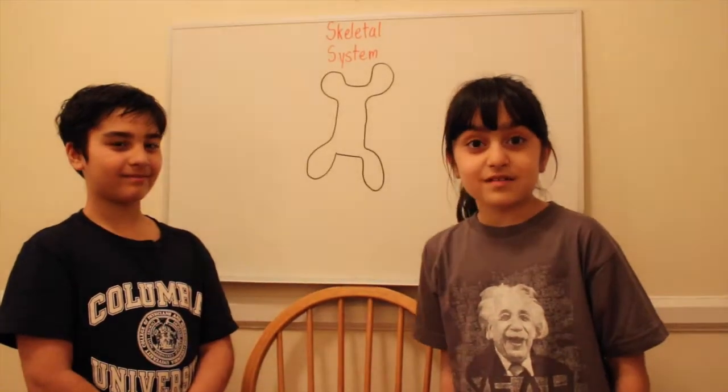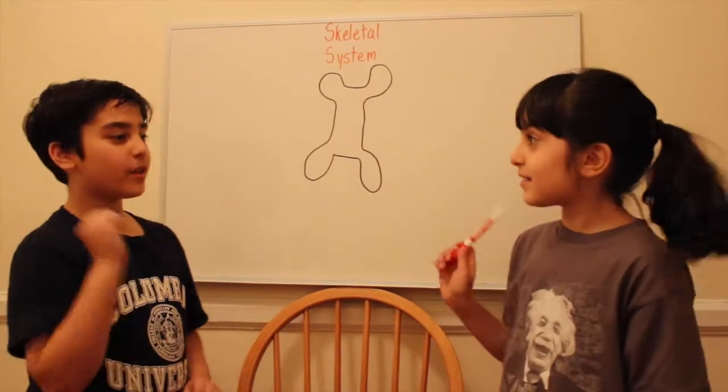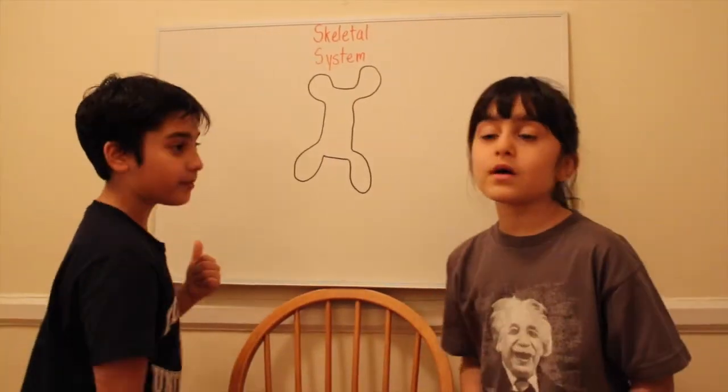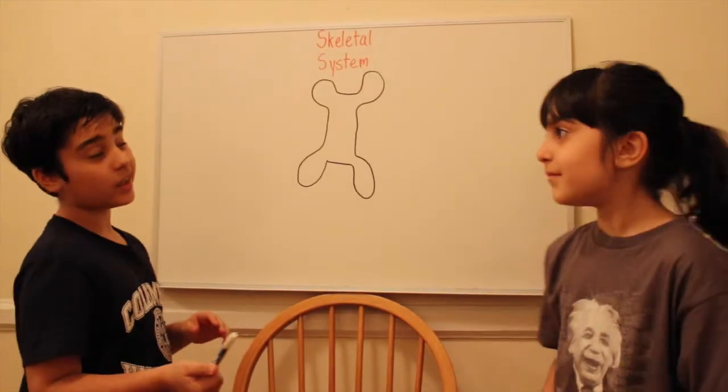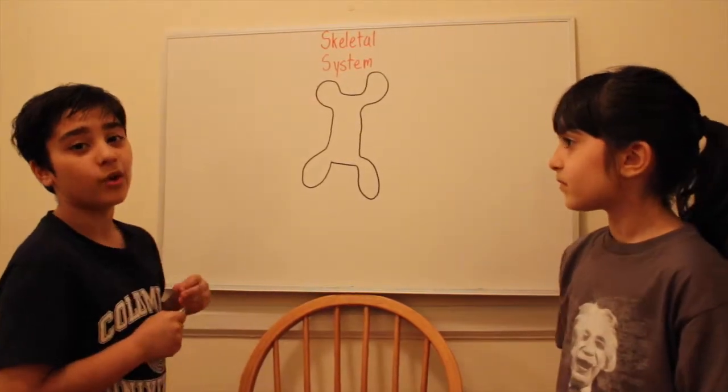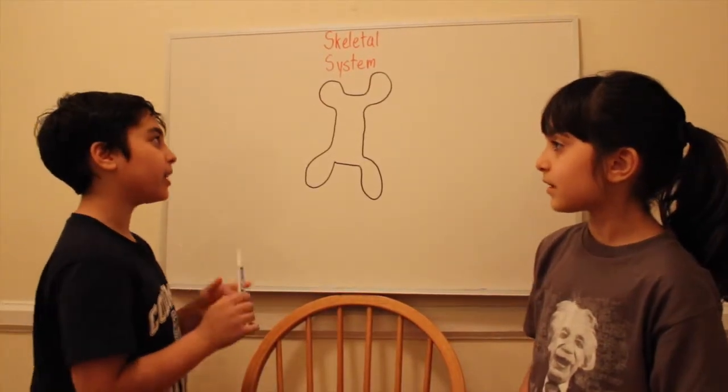The musculoskeletal system is composed of two parts, the muscular system and the skeletal system. For now we're going to start with the skeletal system. The skeletal system is composed of two organs, the bones and the ligaments.